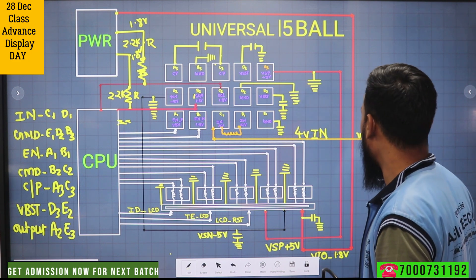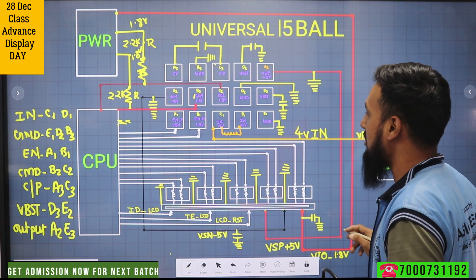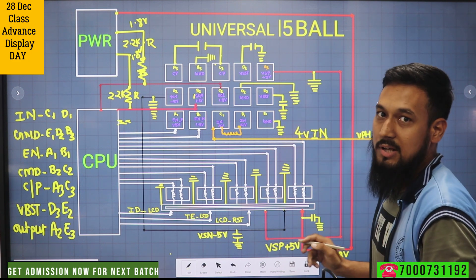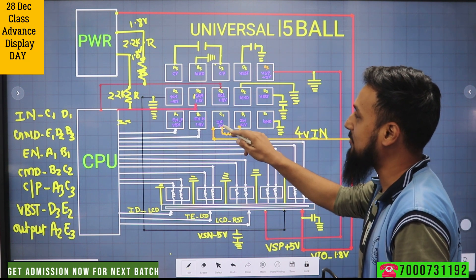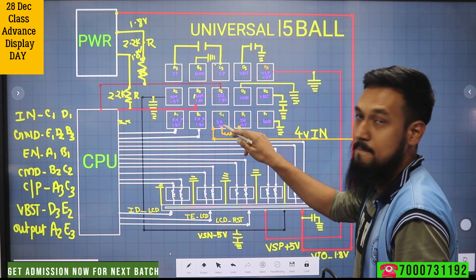First we want the VPH voltage. From the VPH voltage we will get 4V.